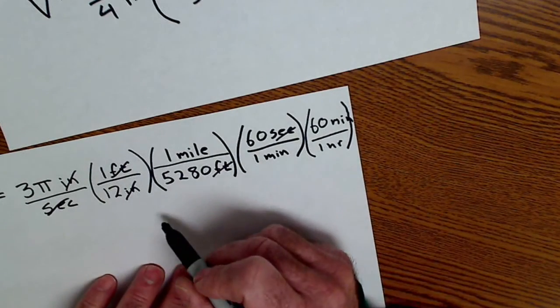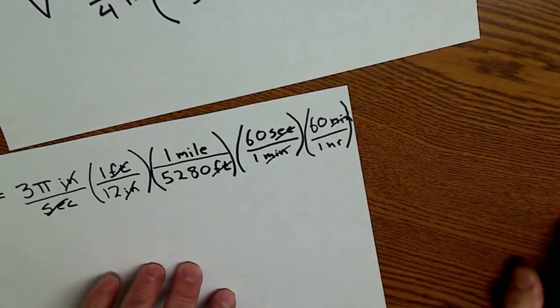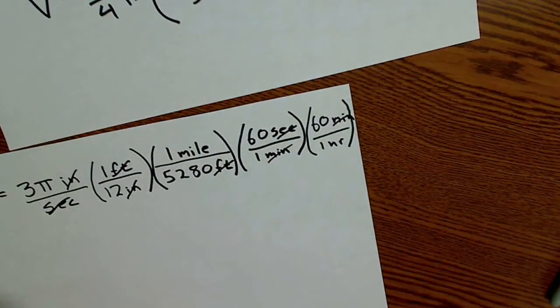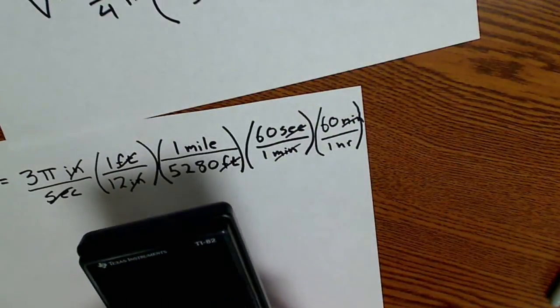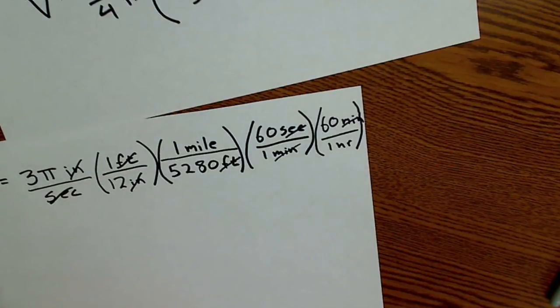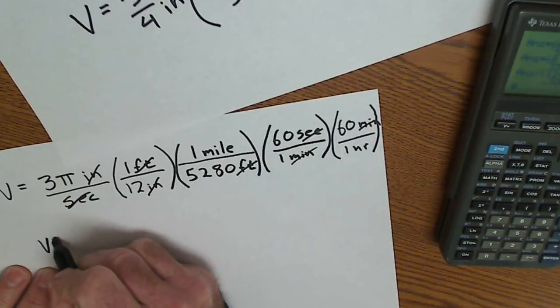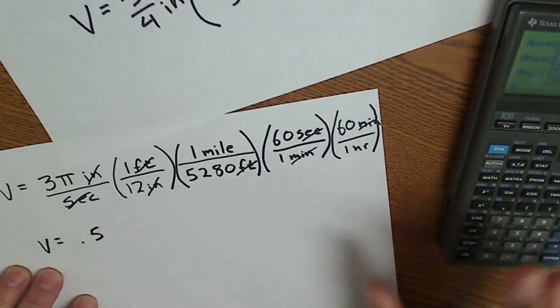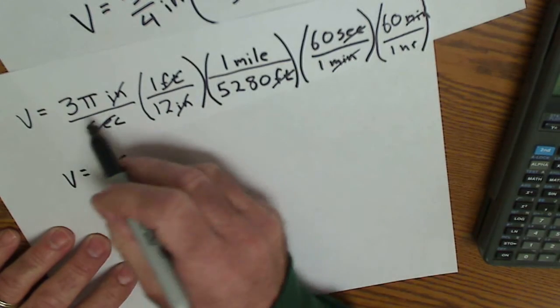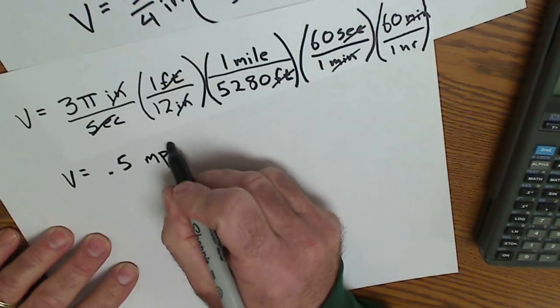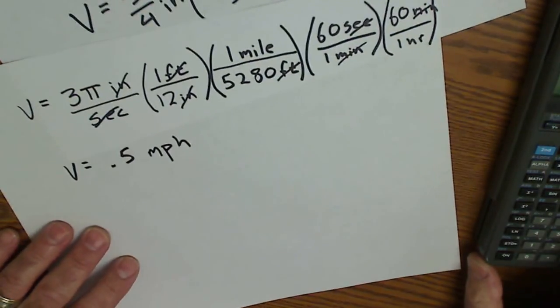Let's see. Minutes will cancel. Only units in the numerator are miles. Only units in the denominator are hours. So I'm going to take three times pi times 60 times 60. So in the numerator, I have almost 34,000. And I'm going to divide that by 12 times 5280. And it works out to be 0.5. So the linear velocity, the outside of that top, is 0.5. And the key is that you keep track of all your units. So it's 0.5 miles per hour. So the outside of that top is traveling at about 0.5 miles per hour.